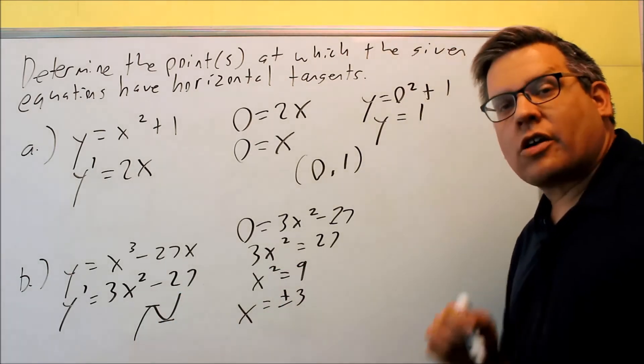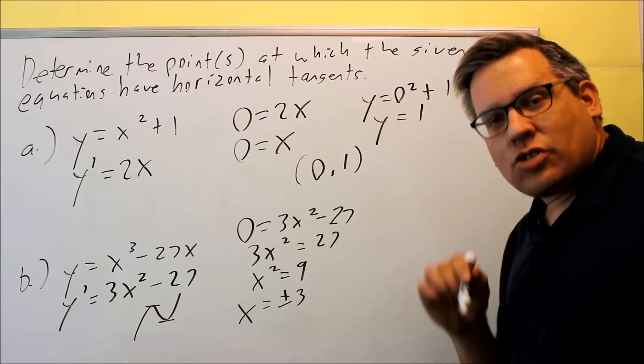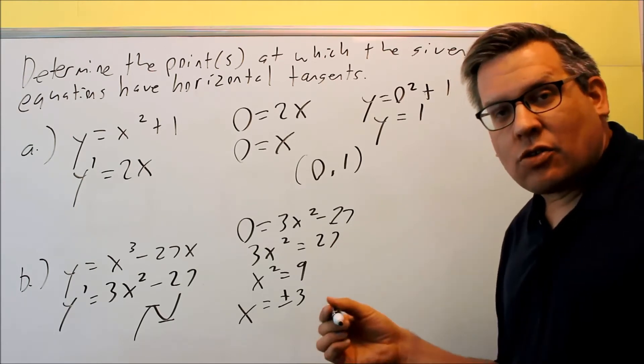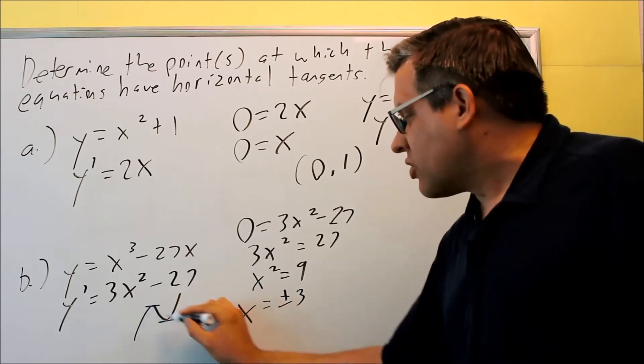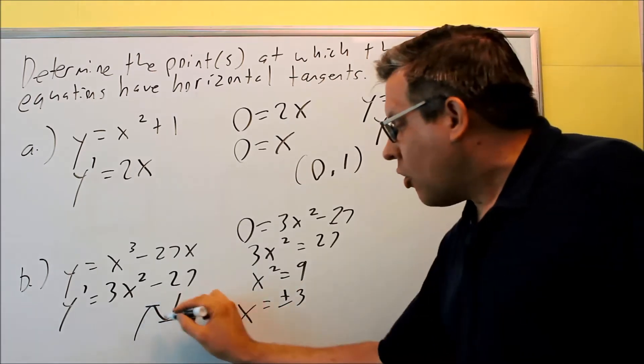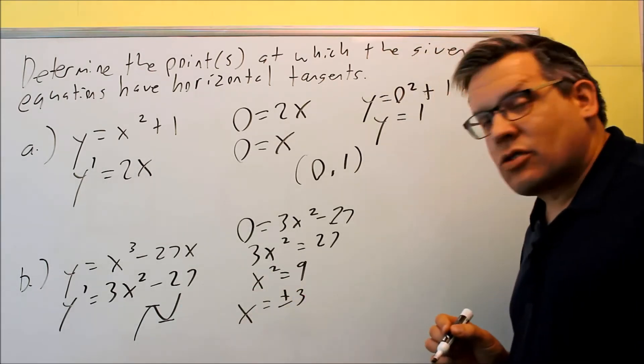Now relative maxes and mins, we are going to talk about that in a later chapter when we get into applications of the derivative, but that's the basic idea. We're trying to find out what x values does this occur at where we get these horizontal lines on the graph at the slope.